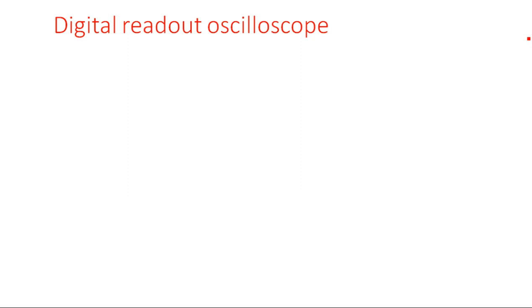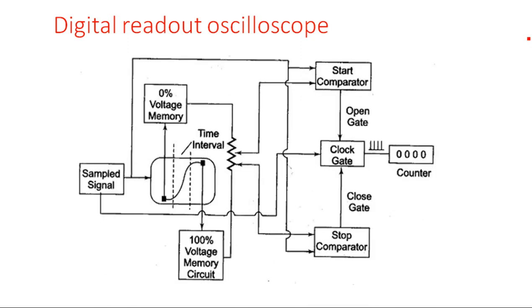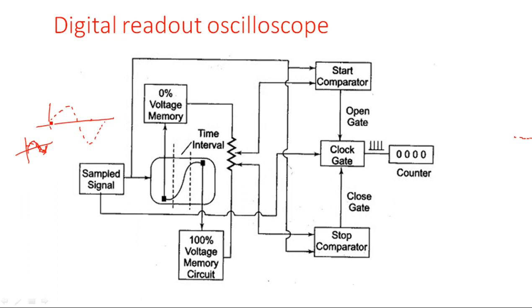Now moving to another type: the digital readout oscilloscope. This is its block diagram. It is used to read the data of the input signal. It has two displays: one is the CRT display, and the other is a counter display. The input signal — say a sinusoidal signal — is sampled into a number of time slots, producing a sampled version.